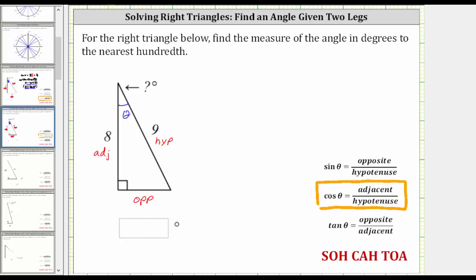So for our right triangle, we now know that cosine theta is equal to the ratio of the adjacent side to the hypotenuse, which gives us eight ninths.